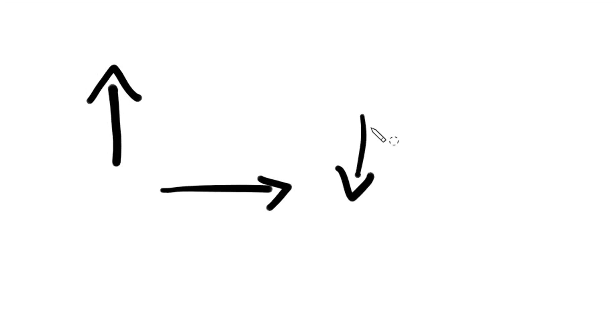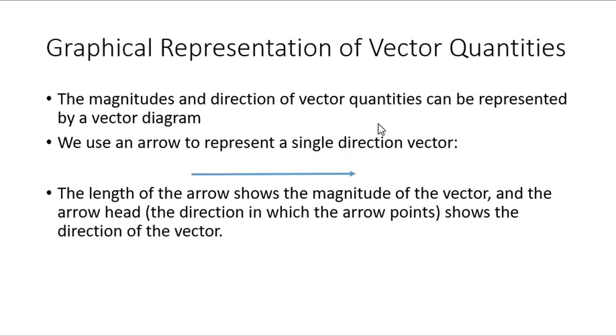If the vector is going up, the arrow points in that direction. If the vector is going sideways or going down, the arrow head indicates the direction. For rough vector sketches, the length of the arrow shows the magnitude of the vector.